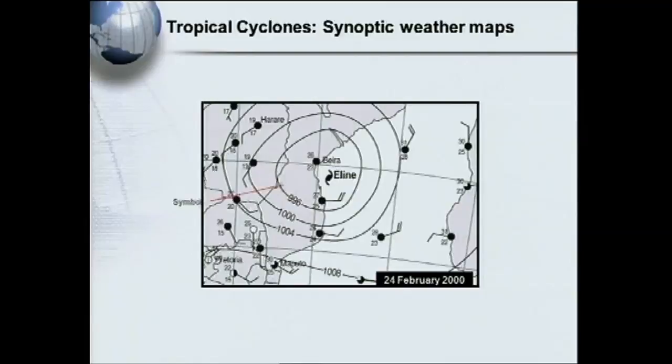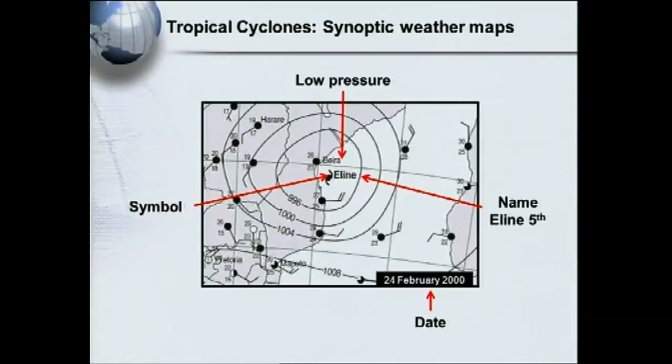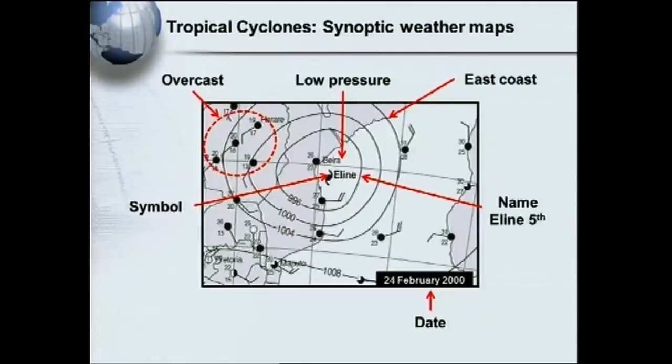The tropical cyclone on synoptic weather maps — how do I recognize it? Firstly, the symbol. The name 'Eline' means it's the fifth cyclone of the season — A, B, C, D, E. There's a low pressure in the middle. The date — from late February you can expect it in late summer. Always on the east coast; remember mid-latitude cyclones are on the west coast. Overcast, clockwise rotation, strong winds. These are the ways to recognize your tropical cyclones on a synoptic map.